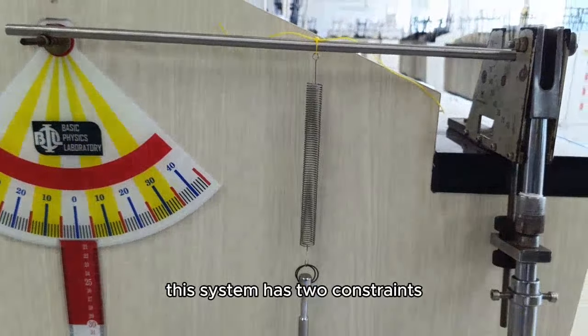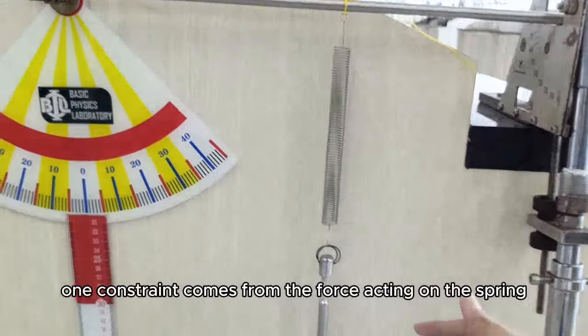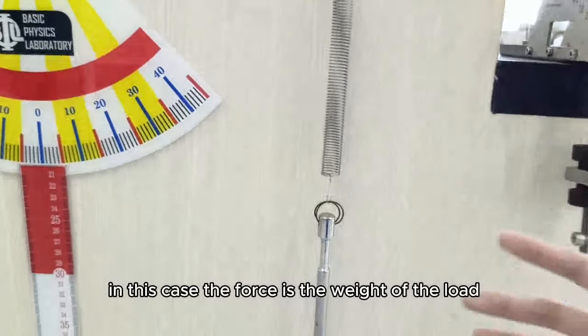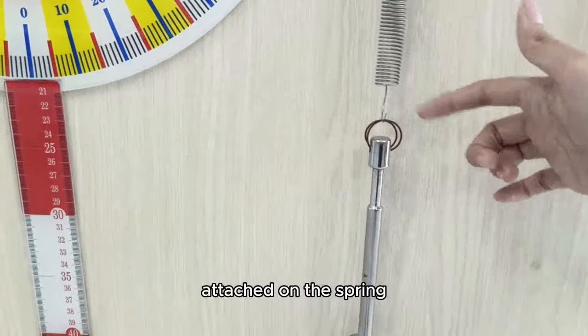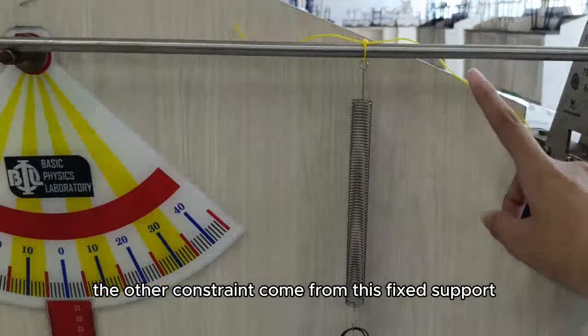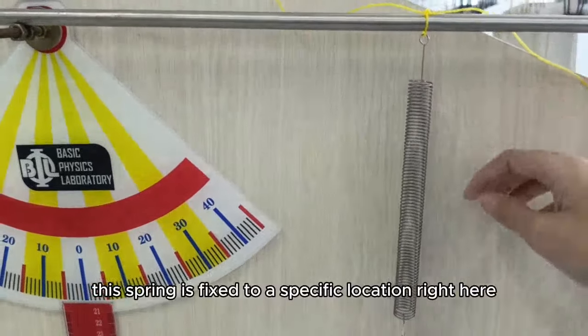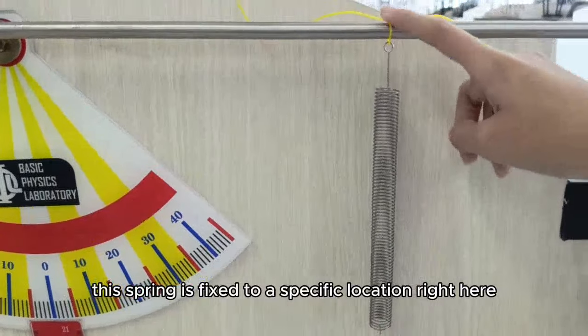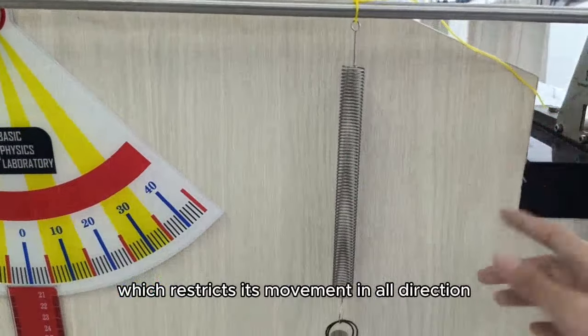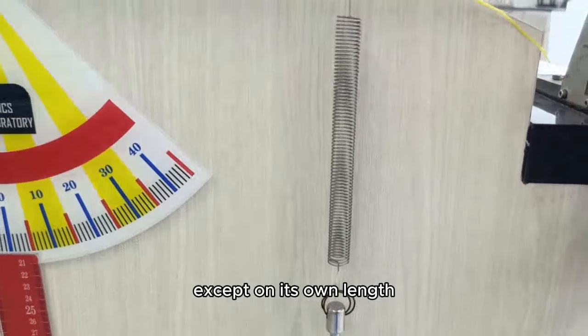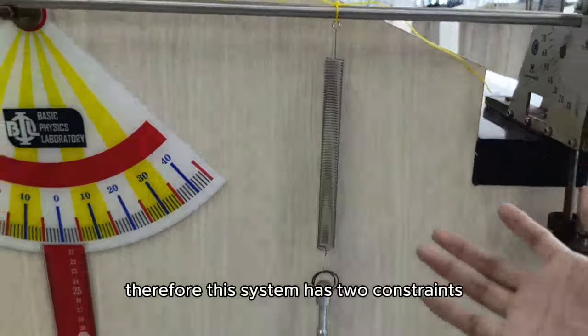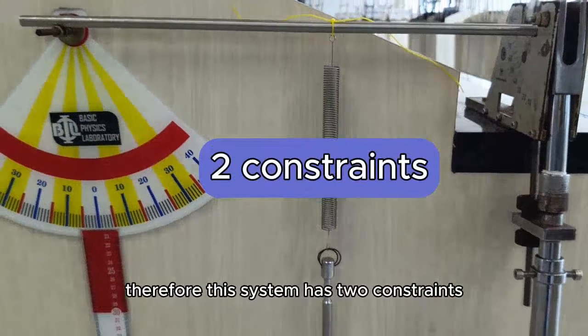This system has two constraints. One constraint comes from the force acting on the spring. In this case, the force is the weight of the load attached on the spring. The other constraint comes from the fixed support. This spring is fixed to a specific location right here, which restricts its movement in all directions except on its own length. This fixed position acts as a constraint. Therefore, this system has two constraints.